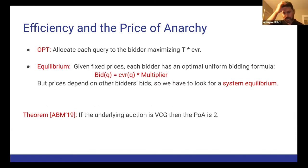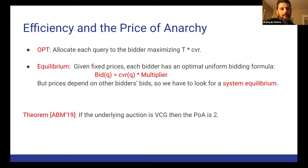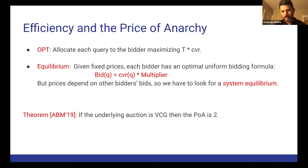Coming to a notion of equilibrium: it was proved in that paper that given fixed prices, each bidder has an optimal bidding formula — the bid of a bidder for query Q is the conversion rate at Q times a multiplier for that bidder. However, prices are not fixed; they depend on other bidders' bids, so all the bids depend on each other and we look for a system equilibrium. It was proven that if the underlying auction is VCG, then the price of anarchy is two, meaning that even in the worst equilibrium you get at least half of OPT.